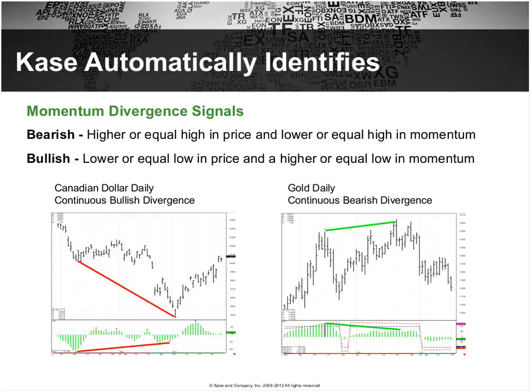Momentum divergence consists of a lower low in price and an equal or higher low in momentum for a bullish divergence, or a higher high in price and a lower high in momentum for a bearish divergence. A lot of people have trouble identifying momentum divergence, so one of the things the Case indicators do is automatically draw the momentum divergence on the chart for you — you don't have to know what it is to use the signals. Even if you do know, sometimes two lows or highs are so close together you'd need your cursor to check values; this eliminates that need.